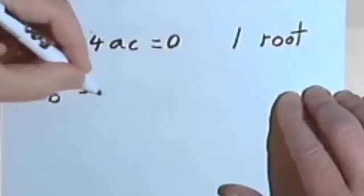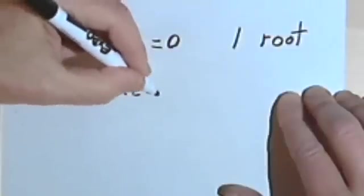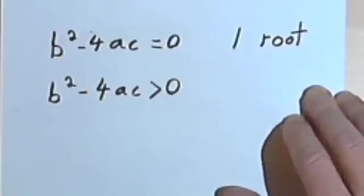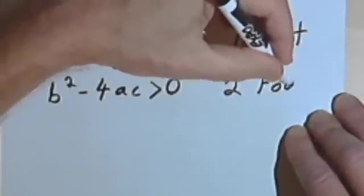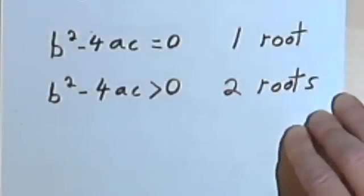If b squared minus 4ac is greater than zero, I'm going to have two answers. So that means there are going to be two roots, or two real solutions.